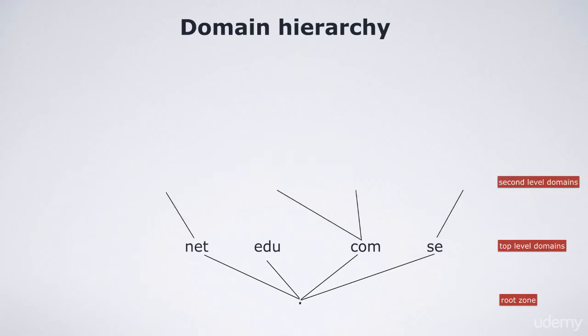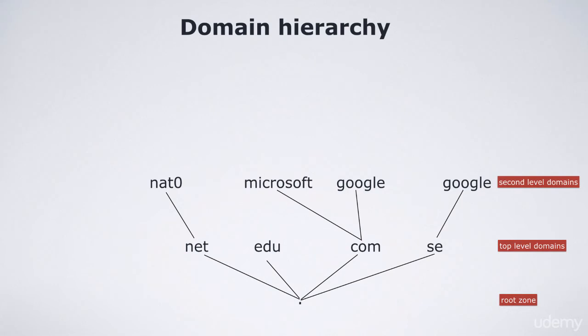From each TLD there are branches to second level domains. Examples of second level domains are microsoft.com, google.se, and nat0.net. When you register your own domain you normally get yourself a second level domain. When you do that you have to decide which TLD you want to hook it to. Or you can do like Google and buy both google.se and google.com and so on. These are two different domains that are handled and configured independently from each other — they can point to the same web server and mail server, but they don't have to.